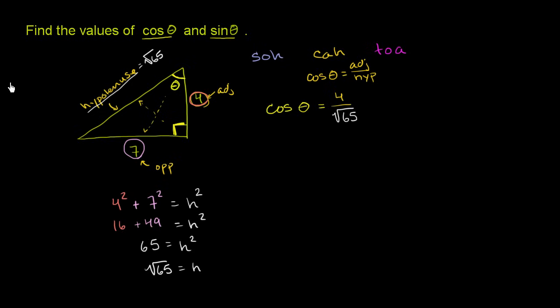Now let's do the same thing with the sine. What is the sine of theta going to be? And I'll give you a few seconds to think about it. Well, SOH tells us that sine is equal to opposite over hypotenuse. In this case, relative to angle theta, the opposite side has length 7. And what is the hypotenuse, or what is the length of the hypotenuse? Well, we just figured it out. It is the square root of 65.